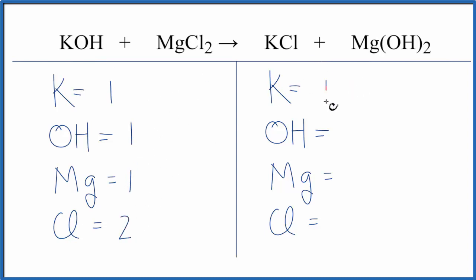On the product side, we have one potassium, OH this two means we have two of these polyatomic ions, the hydroxide ions, two of those, one Mg, and one Cl.